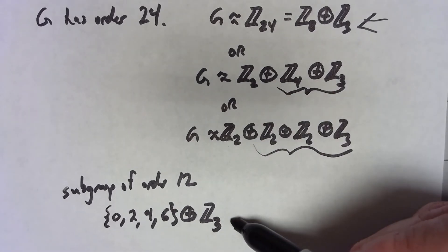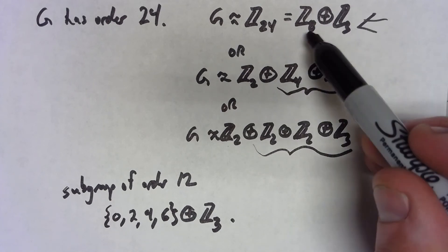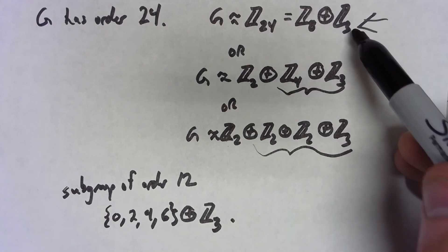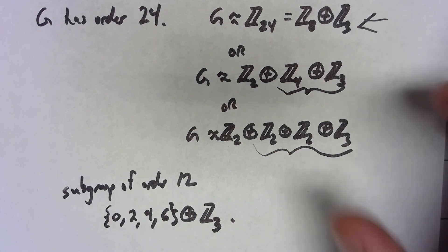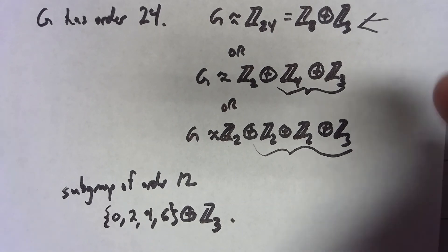Now sometimes, like this one here, you might have to look at a subgroup of one of these individual components, but always, based on the way this works, you're always going to be able to find some subgroup of the proper order.